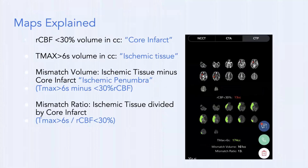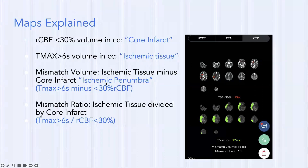What do we consider our core infarct? CBF less than 30% of normal brain is generally our core infarct. Tmax greater than six seconds is our area of ischemic tissue. Mismatch volume is ischemic tissue minus core infarct — that's your ischemic penumbra. Mismatch ratio is ischemic tissue divided by core infarct (Tmax >6s divided by CBF <30%).